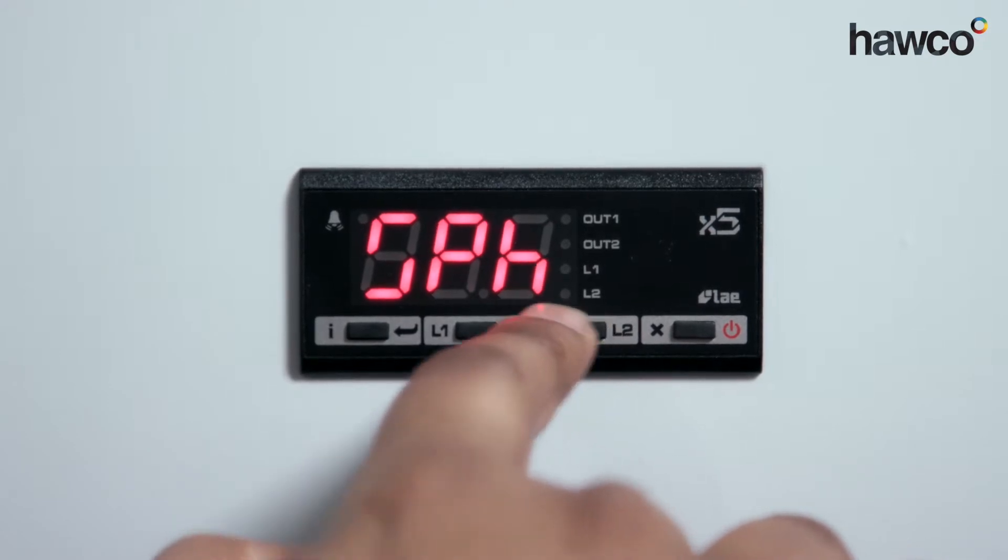Once we're in, we can use the up and down buttons to skip through all the different parameters. In this one we need to find 1CH.